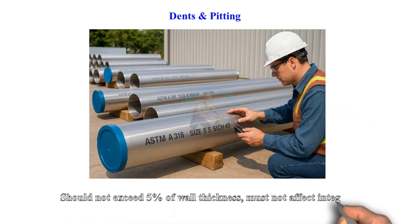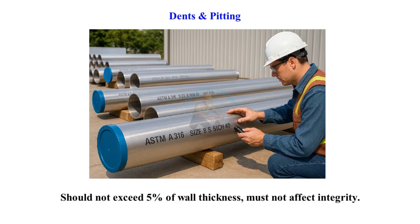Dents and pitting should not exceed 5% of wall thickness and must not affect the pipe's integrity.